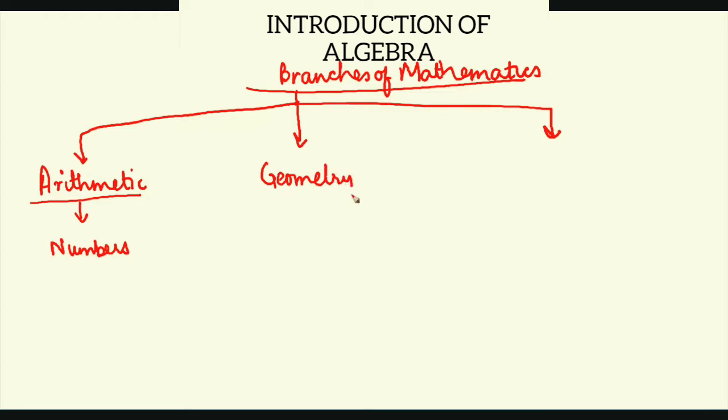The second branch is geometry. Geometry is a branch where we deal with shapes or various kinds of shapes. If you talk about shapes, this could be triangles, squares, and so on.